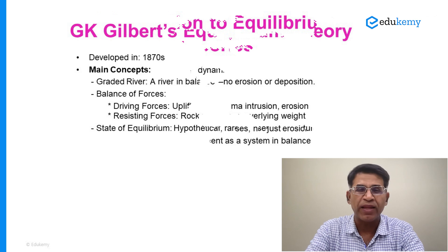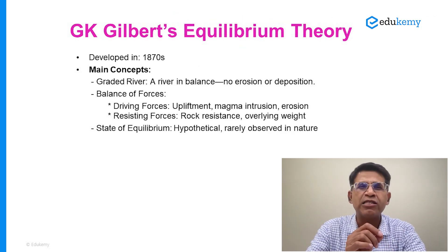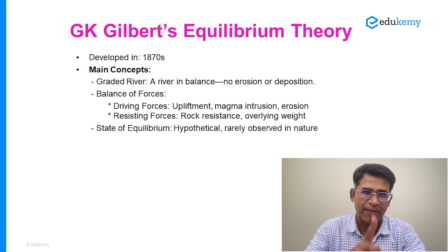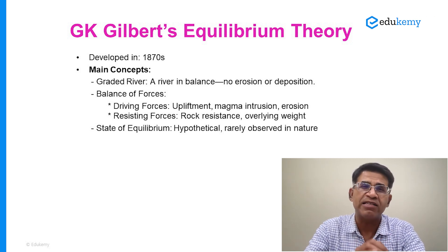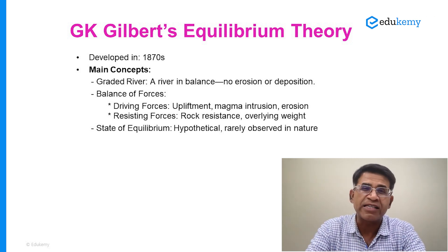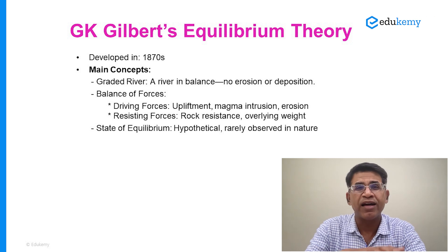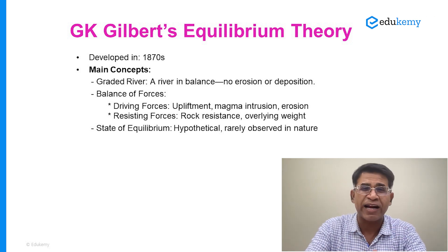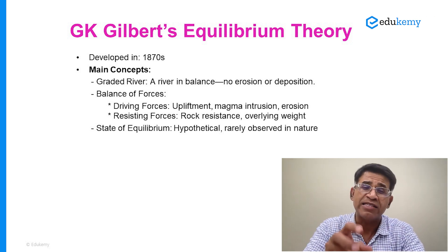A couple of points for each one of them. Number one is G.K. Gilbert. G.K. Gilbert is given the credit of having discussed equilibrium theory for the first time. What he said was that landform development shows equilibrium tendencies in two ways. Number one, a river has a state of grade. A grade is a balanced state where a river neither erodes nor deposits. The graded state is one where the river's capacity of transportation is equal to the amount of sediments in the river — whatever the river can transport, it has that much sediment.